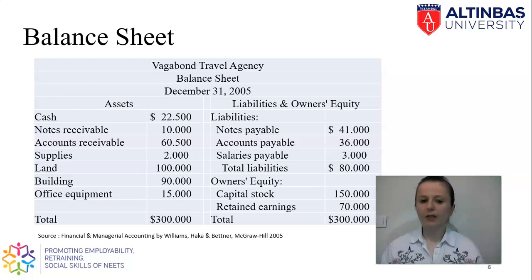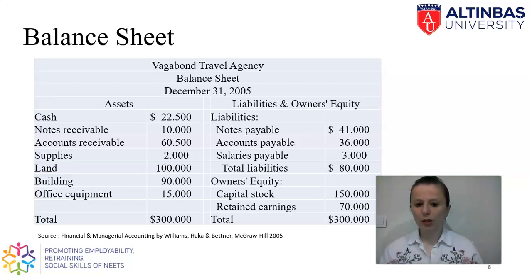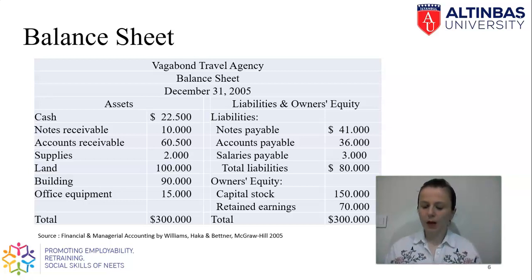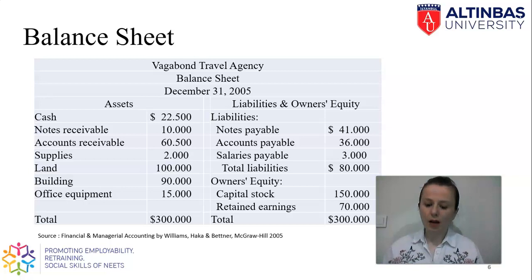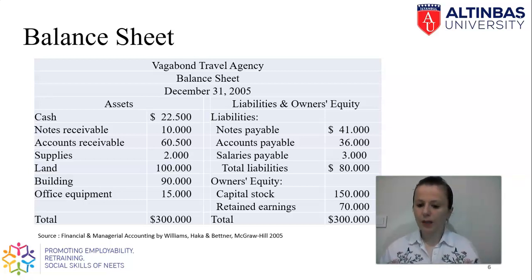Then accounts receivable, then supplies — we are expecting to sell them. And then land, building, office equipment, and so on. On the other hand, liabilities are in an order from the most current one to the least current — the ones due earlier will be shown at the top. Under liabilities we have owner's equity, and this total is equal to the total of assets. Under owner's equity there is capital stock, which is simply the money that we put inside the business to form it at the beginning, plus retained earnings. Retained earnings refers to the income from previous accounting periods that you kept inside the business to improve management — for example, to purchase a new machine.